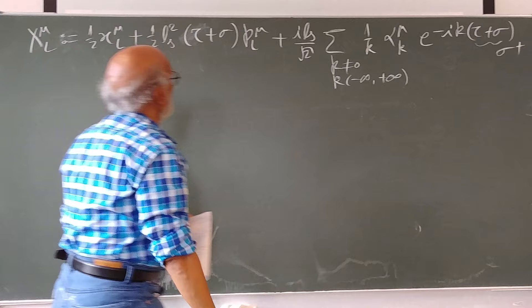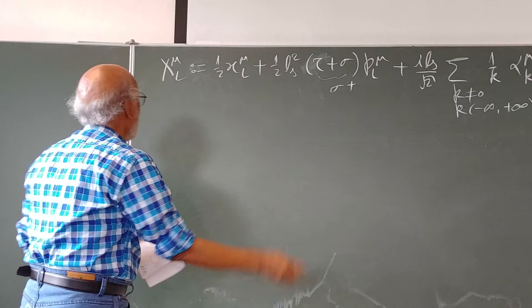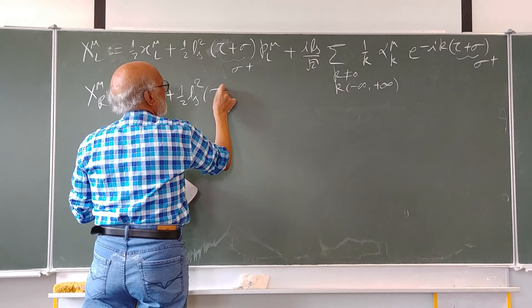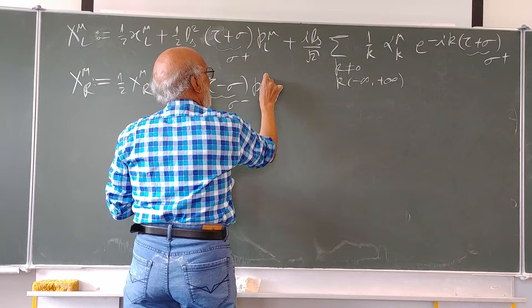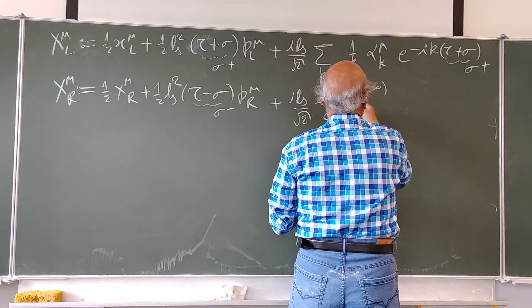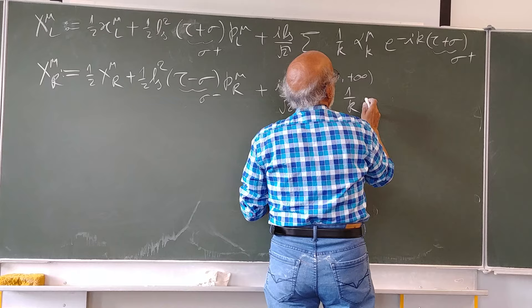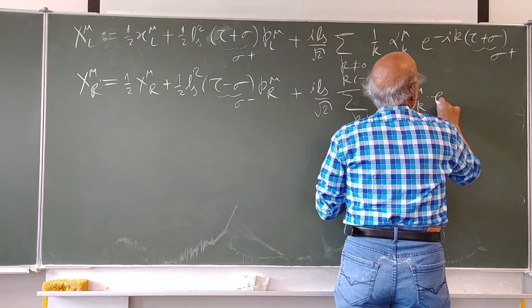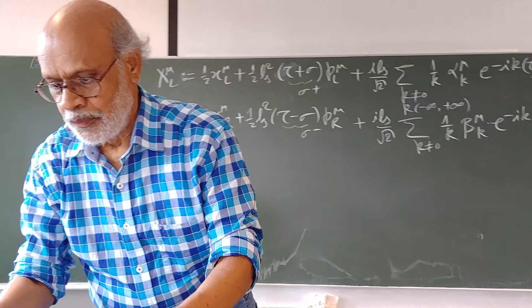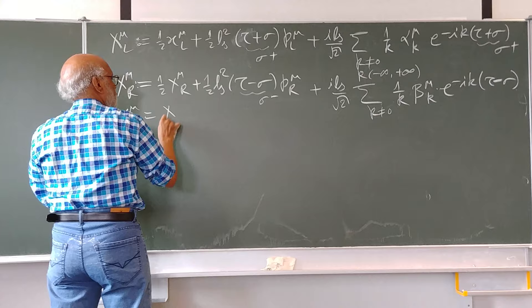We remind ourselves that τ + σ is sigma-plus. And X^μ_R is one-half x^μ_R plus one-half l_s² (p^μ_R)(τ − σ) plus a summation over k ≠ 0, k going from minus infinity to plus infinity, of (1/k) beta^μ_k e^{-ik(τ − σ)}. The total solution is of course X^μ = X^μ_L + X^μ_R.